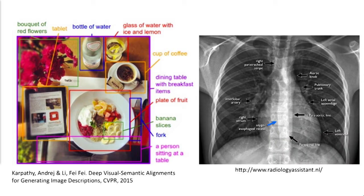When radiologists see this, they say, hey, that's what I do — I look at images, I describe things. It used to be that if I wanted to build a program to recognize, let's say, the left ventricle, that was, using old-fashioned AI techniques, a significant effort. It took quite a long time to do that.